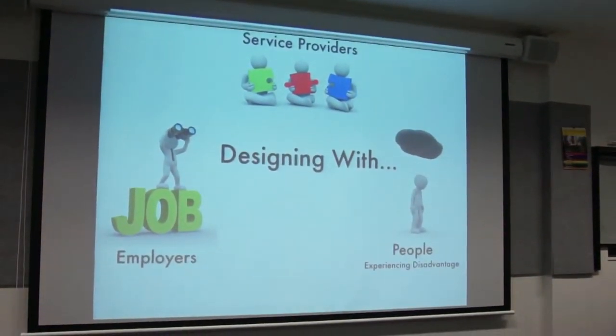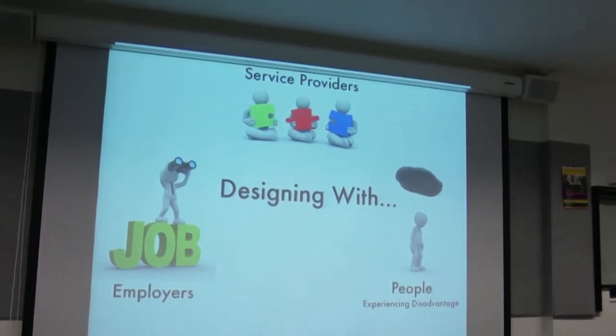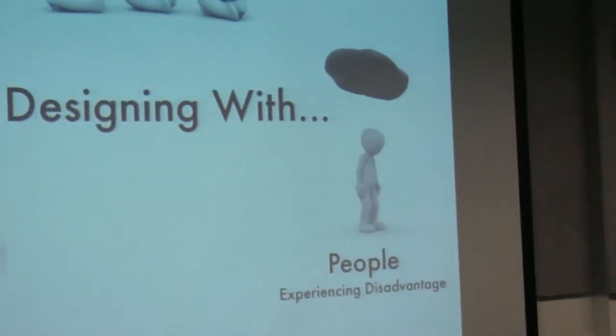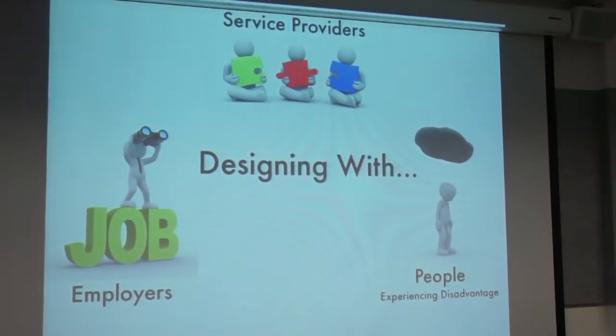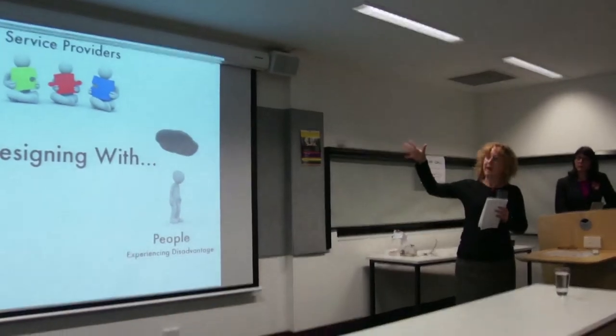The very brief snapshot I'm going to give you of work I've been doing in those communities takes the designing-with approach into much more of a systems level — sitting between the community level and the system level. It's designing with people who are experiencing disadvantage, but also designing with employers, because most of the disadvantage in those communities is around joblessness. If we just focus on the unemployed and don't co-design with employers, we're only addressing the supply side, not the demand side. And also the service providers — it's not the case that there aren't huge numbers of people desperately trying to address disadvantage, so to exclude them from the co-design process is equally dangerous.